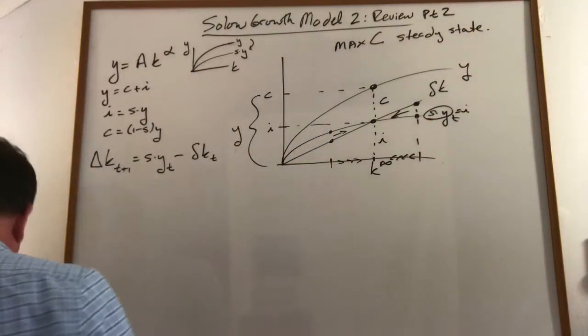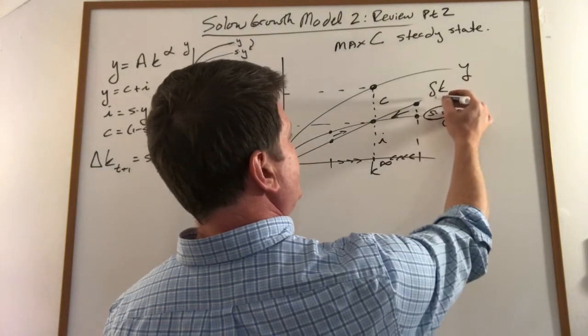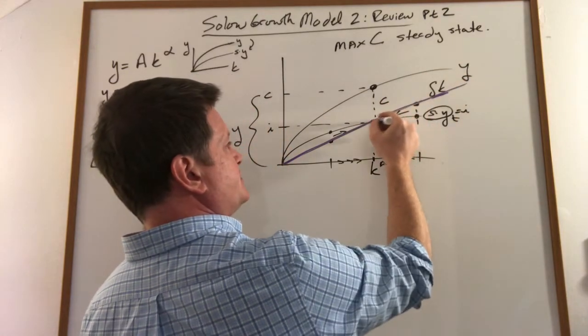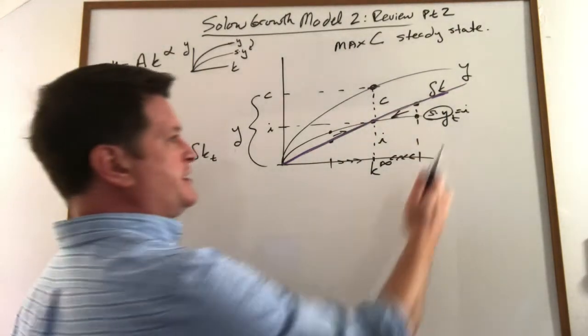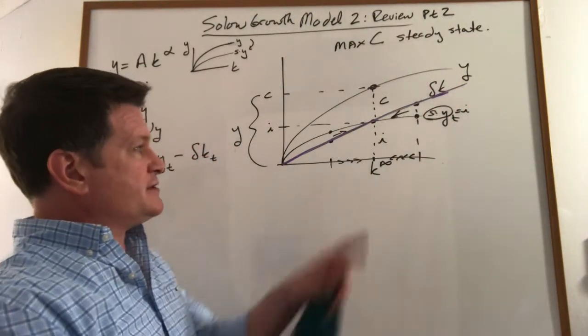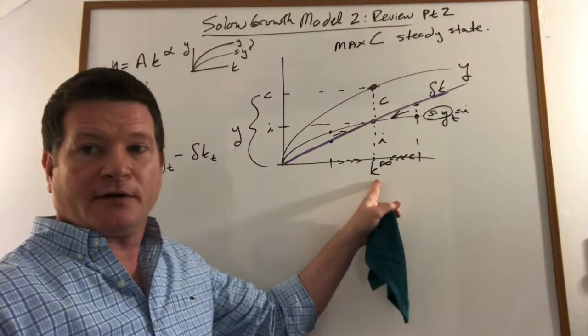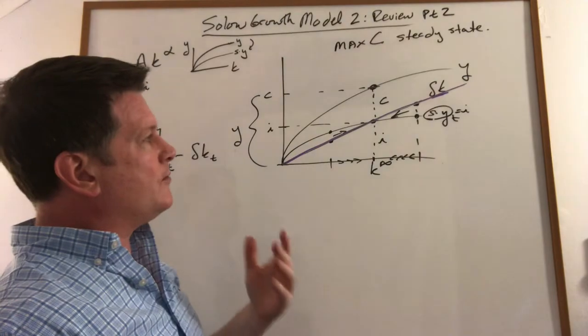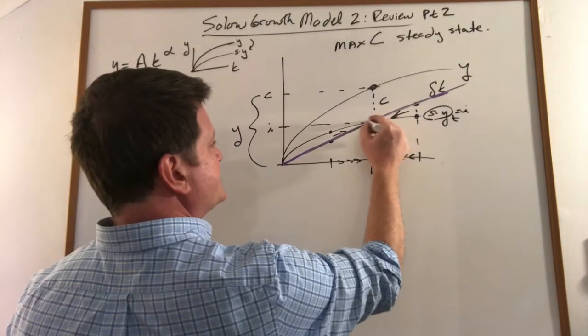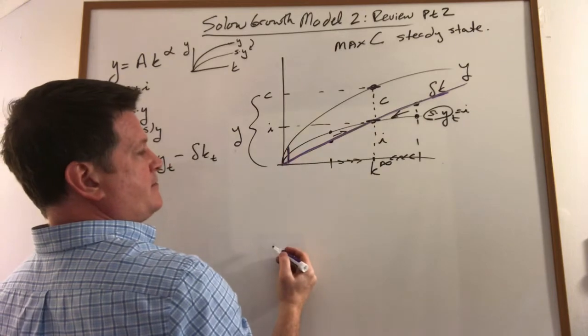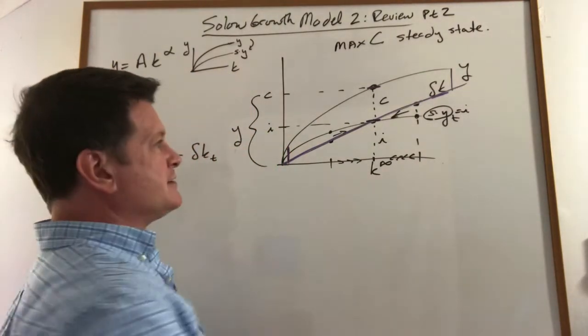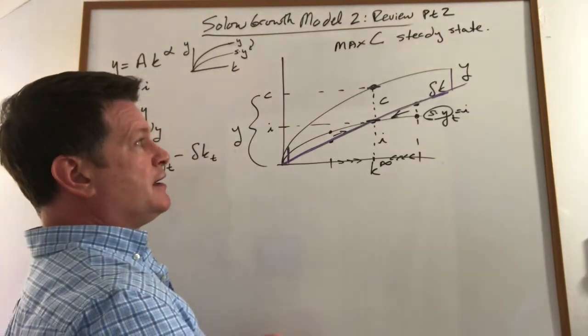So our next question is how to find the max consumption steady state. I'll start by pointing out that the distance between this line and Y is consumption. This investment line cutting the break-even line tells us where investment happens and is determined by our savings rate. So really I need to just find where this distance is greatest. Clearly this distance here is bigger than it is here, so consumption here is bigger than it is here, and it looks like it's bigger than it is there. So somewhere in the middle, consumption is the highest.